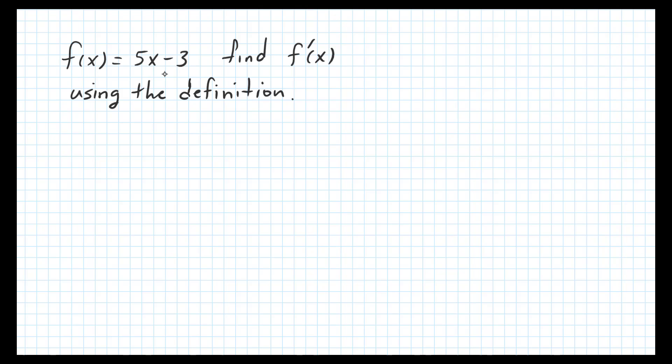Here we're given a linear function f(x) = 5x - 3 and asked to find the derivative using the definition. We can see that if we used the power rule, the power on x is 1, so 1 times 5 is 5, and the derivative of a constant is 0. So the answer is going to be 5, but let's go ahead and use the definition like it asked.